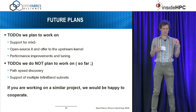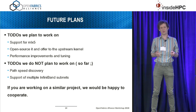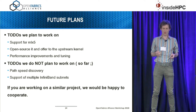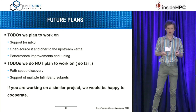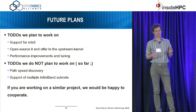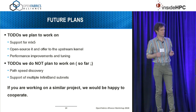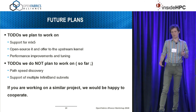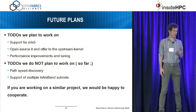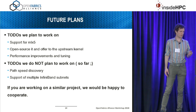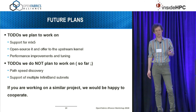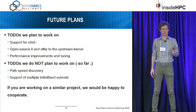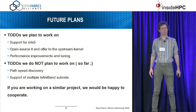There are still some things to be improved for UIB. First, we are planning to add support for MLX5. We are also planning to open-source UIB and offer it to the upstream Linux kernel, and we are planning to work on performance optimizations and tuning. There are also some things we are not planning to work on in the near term, including path MTU discovery and support for multiple InfiniBand subnets. If you are working on a similar project or willing to collaborate, please let us know — we will be happy to cooperate.